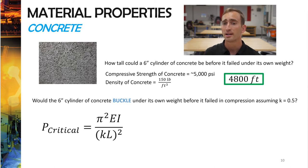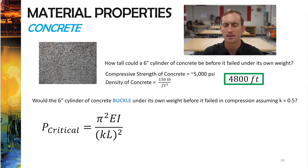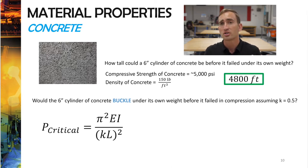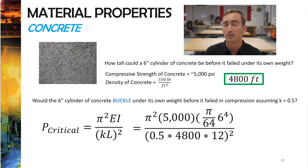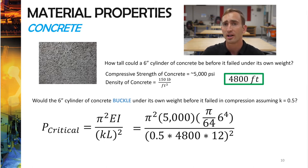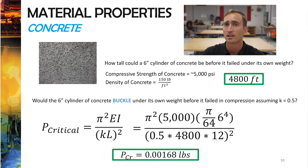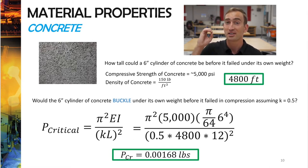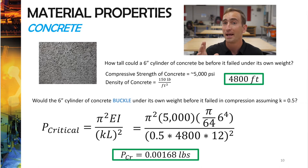Using the critical buckling equation, we know everything: K, assuming fixed-fixed at top and bottom; L is 4,800 feet tall; E is 5,000 psi; and the moment of inertia is π/64 times the diameter to the fourth — the area moment of inertia for a circle or cylinder. Plugging in all the numbers, we get that the critical buckling load for this column would be 0.00168 pounds. Because P-critical is basically zero, this column would most likely have buckled long before it ever reached 4,800 feet tall.